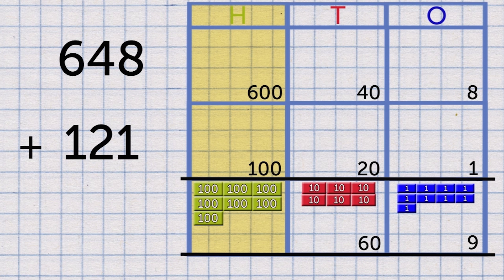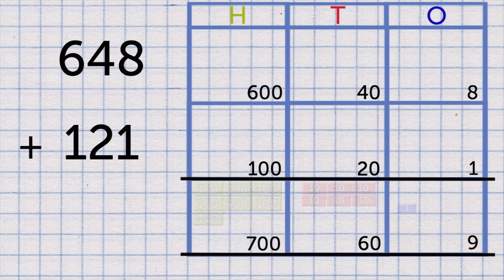...makes 7 hundreds, or 700. That's 7 hundreds, 6 tens, and 9 ones: 700, 60, and 9. Add these together to give the total: 769.